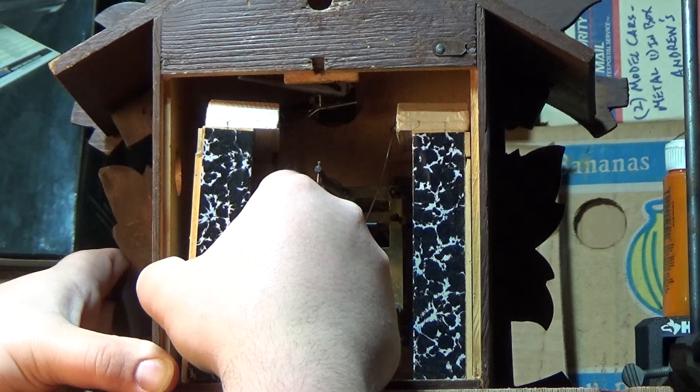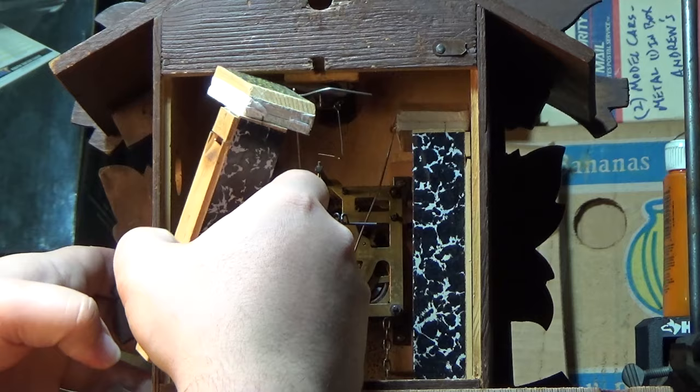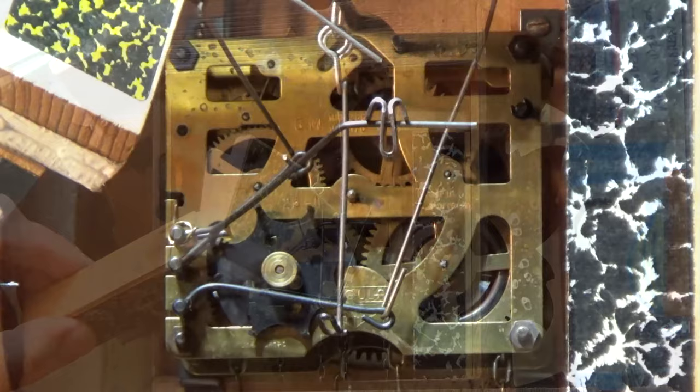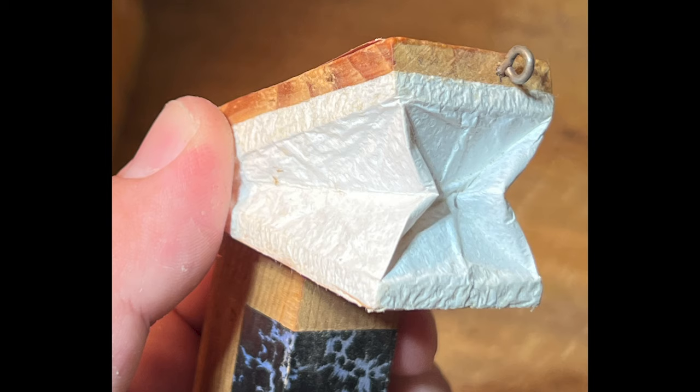This next part is a little tricky. Once the bellow is free of the nail, it must be turned so the bent end of the lift wire can slide through the eye hook at the end of the lift lever on the back of the movement. Special care must be taken during this operation. The top of the bellow has a thin paper or cloth material that is essential for the bellow to make its sound. It is very easy to rip this material.